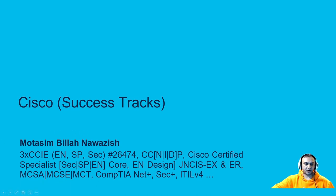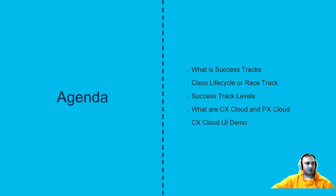Let's jump into the agenda. In this session we will see what Success Tracks is and what it's all about. We will check what the Cisco lifecycle is that they've defined for every product or subscription, the Success Track levels, and the two components — CX Cloud and PX Cloud — and finally we'll have a quick demo of the Cisco CX Cloud UI interface.